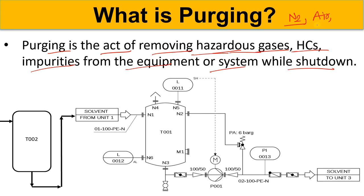The question arises: why is nitrogen most commonly used for purging? The main reason is that nitrogen is dry and it also acts as an inert gas. It is a dry and non-combustible gas, and it also displaces your combustible gases. When it displaces them, the combustible atmosphere is eliminated. That's why we use nitrogen most of the time as a purging gas or purging medium.